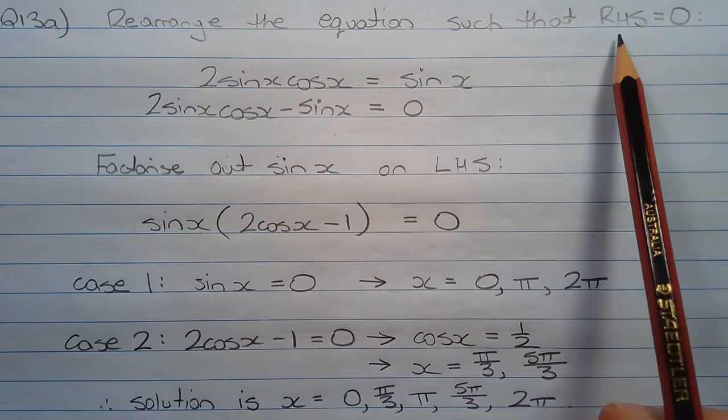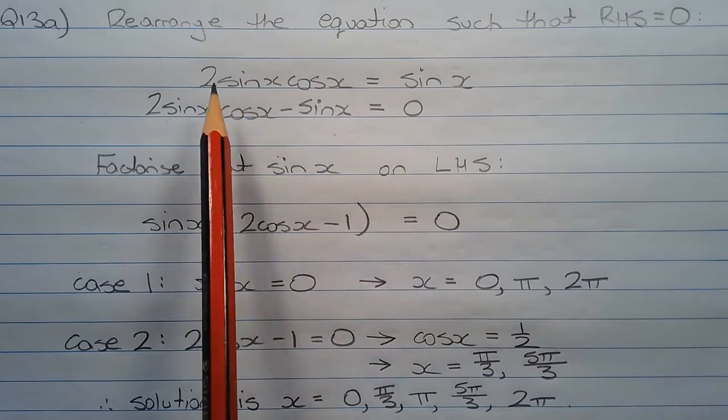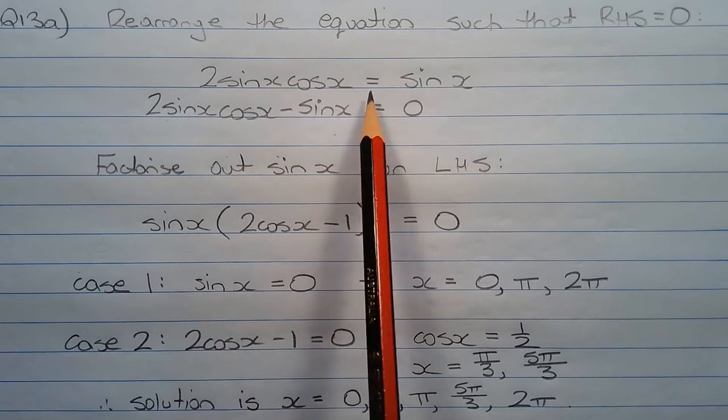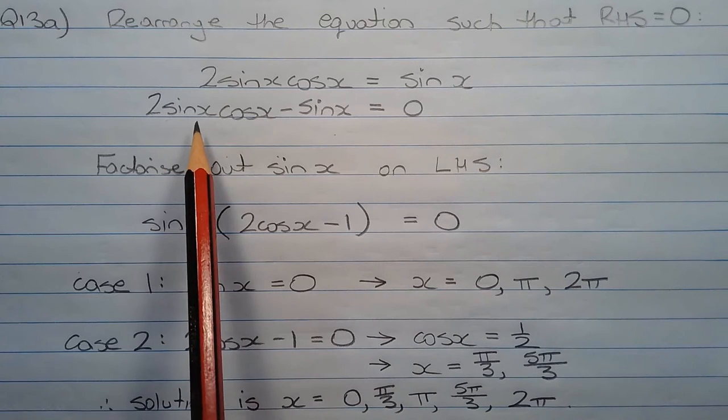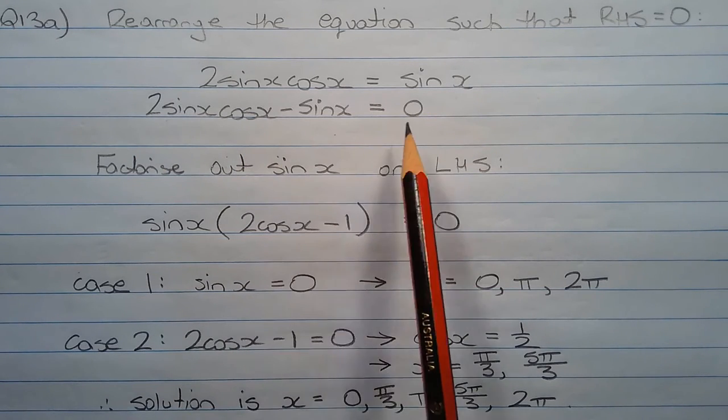Rearrange the equation such that the right hand side equals 0. Starting with 2 sine x cos x equals sine x, subtract sine x from both sides of the equation so we have 2 sine x cos x minus sine x equals 0.